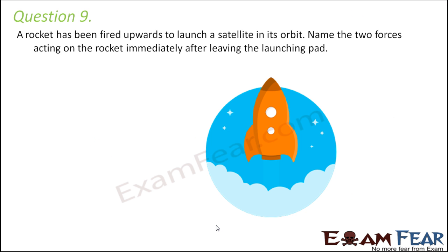Question number 9. A rocket has been fired upwards to launch a satellite in its orbit. Name the two forces acting on the rocket immediately after leaving the launching pad. Now, as the rocket moves upward, one force will always be gravitational force. That is, the force acting towards the center of the earth. And the next would be the atmospheric pressure. Because immediately as it leaves the launching pad, it has to cross the various layers of atmosphere. So that atmosphere is also going to exert a lot of pressure on it. So these are the two forces which will be acting on the rocket.